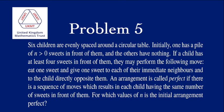If a child has at least four sweets in front of them, they may perform the following move: eat one sweet and give one sweet to each of their immediate neighbors and to the child directly opposite them. An arrangement is called perfect if there is a sequence of moves which results in each child having the same number of sweets in front of them. For which values of n is the initial arrangement perfect?